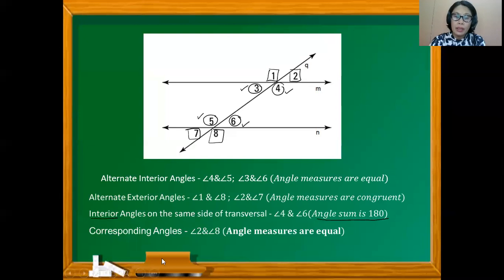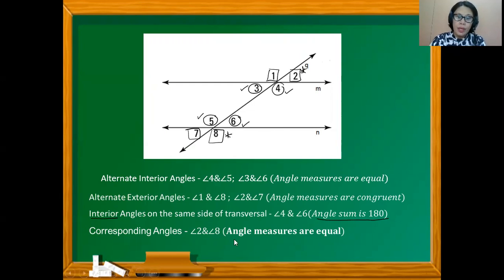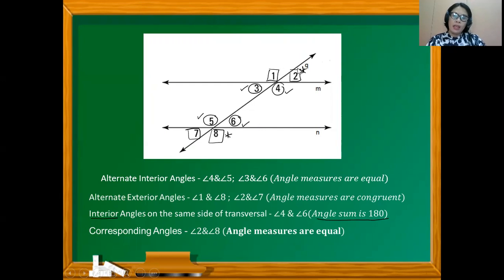Corresponding angles, such as angles 2 and 8, have equal angle measures. They are placed outside of the parallel lines and belong to the same transversal line, so their angle measures are equal.